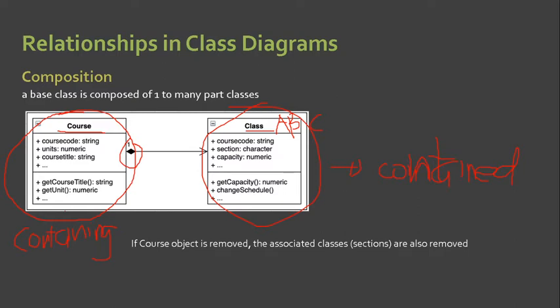It is a kind of dependency wherein if one class is destroyed, the related class is also destroyed. So in the example, Class C will cease to exist if the course is removed from the curriculum. This is our containing class and this is our contained class — if the course is removed, the containing class and all the classes it contains will automatically be destroyed or removed, because they use the composition relationship.